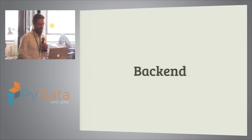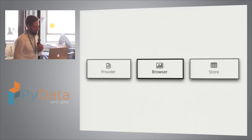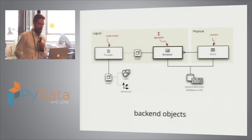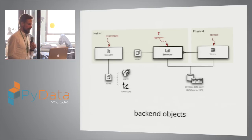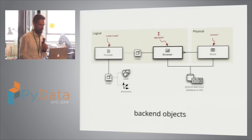So what is the new backend of Cubes? There are three kinds of objects in the backend: the model provider, the aggregation browser, and the data store. The model provider provides the model, either from a file or from an external source. The browser does the aggregations, and the store connects to the database.